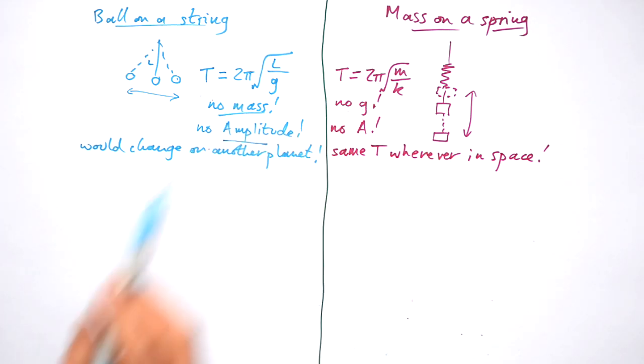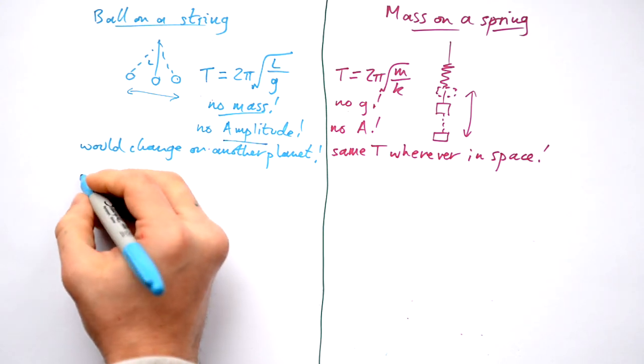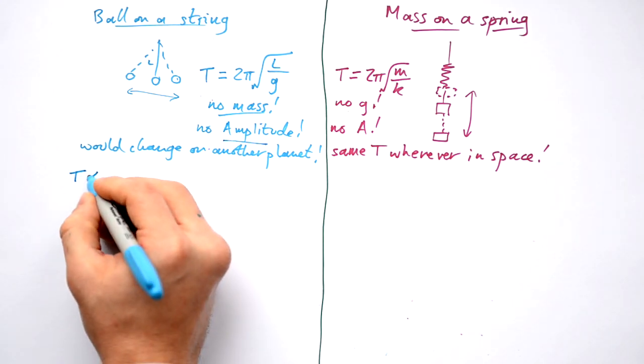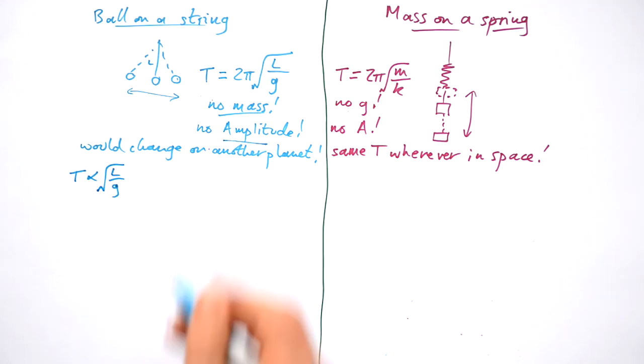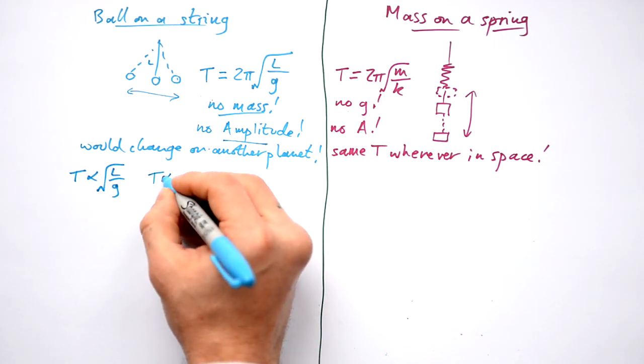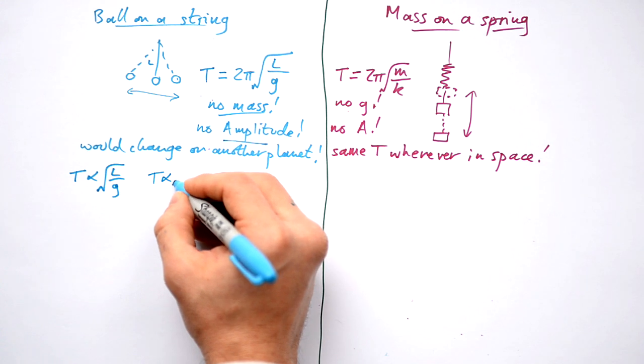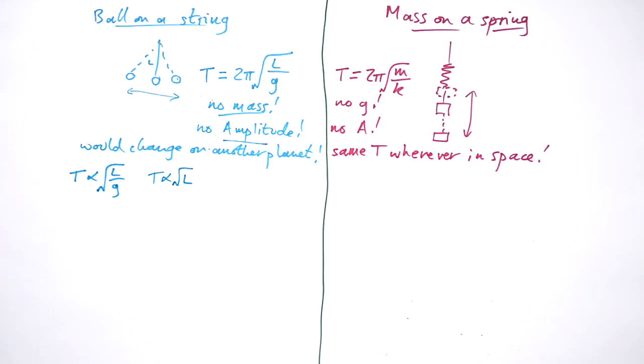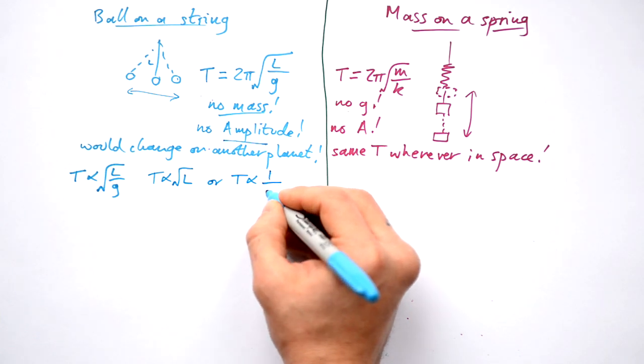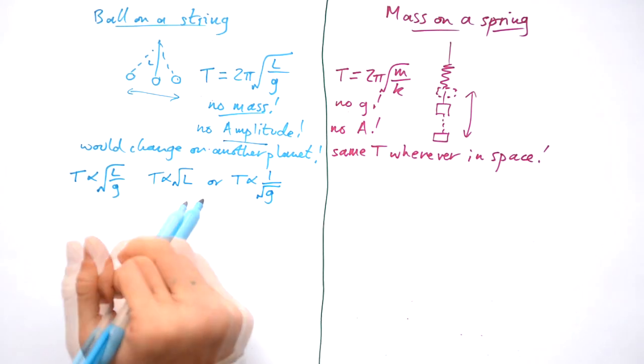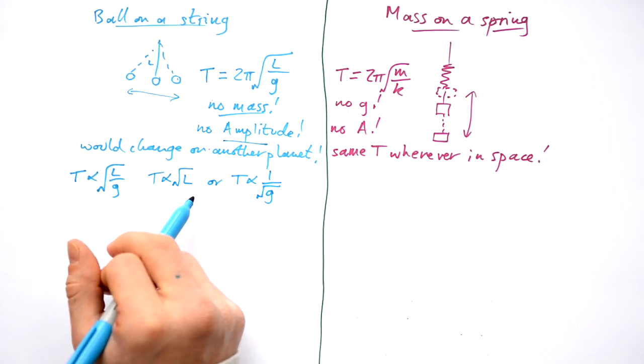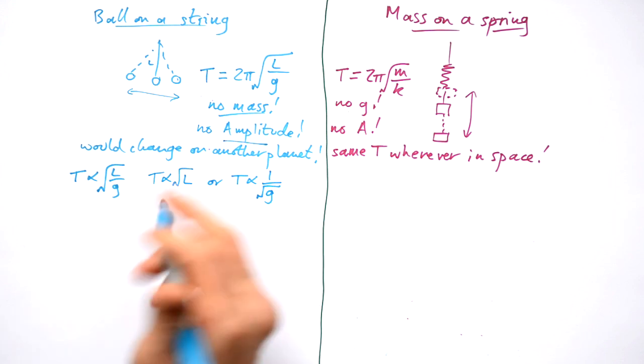So how are these things proportional to each other? Well, 2π is a constant, so we can say that the time period is proportional to the square root of L over g. If g was constant, time period would be proportional to the square root of L. If the length was constant, then that would mean that T would be proportional to 1 over the square root of g. If you haven't seen my video on proportionality yet, go and have a look at that if you're unsure of how to deal with this kind of question.